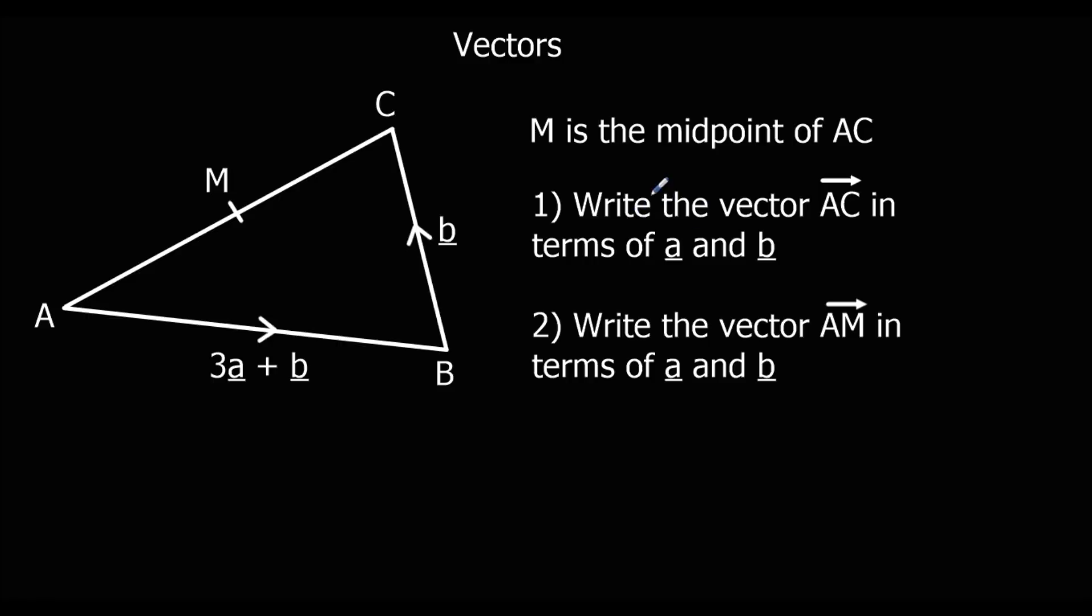So to start with, we're going to write down A to C in terms of a and b. I can't go along here, I don't know what it's called. So I'm going to take the longer route. So I'm going to say A to C, again, is A to B plus B to C.